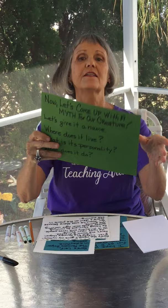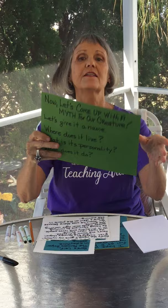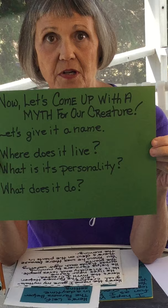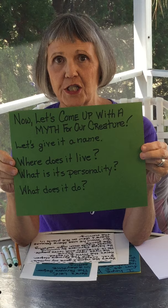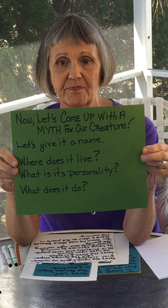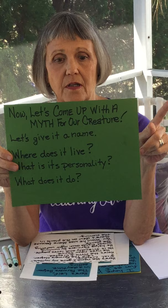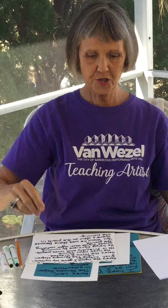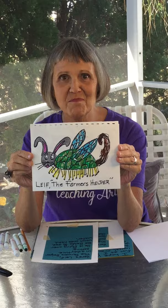Now let's come up with a myth. A myth is also known as an imaginary story. The first thing we should do is give our creature a name, and once you have the name you can write it at the top or the bottom of your drawing. Then let's think and decide: where does it live, what is its personality, and what does it do?